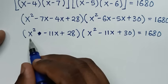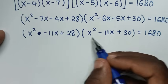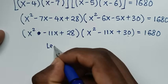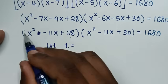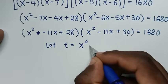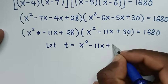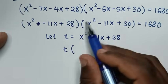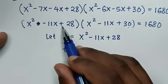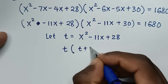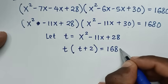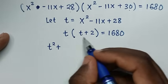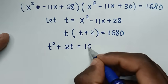Notice that both expressions contain x squared minus 11x, and the constants are 28 and 30 — a difference of 2. So we let t equal x squared minus 11x plus 28. Then the second bracket becomes t plus 2, giving us t(t plus 2) equals 1680.